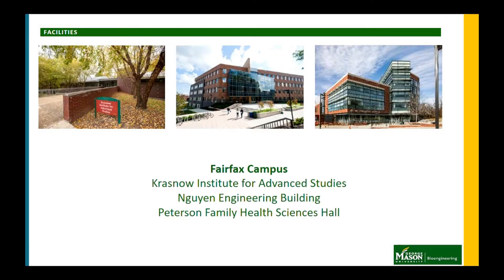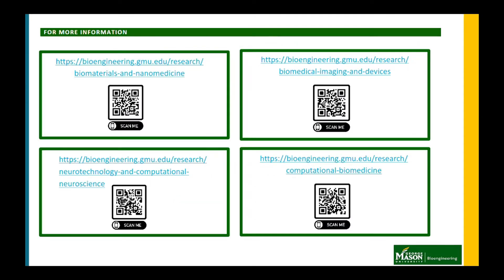Our pillar is spread over three main locations on George Mason University's Fairfax campus: the Krasnow Institute for Advanced Studies, the Wynn Engineering Building, and the Peterson Family Health Sciences Hall. For more information about this and other research areas in the department, please check out the website. You can also take a quick picture or scan the QR codes here. Thank you and have a good day.